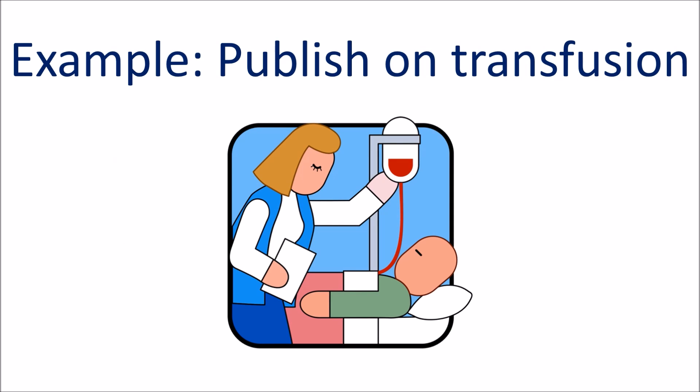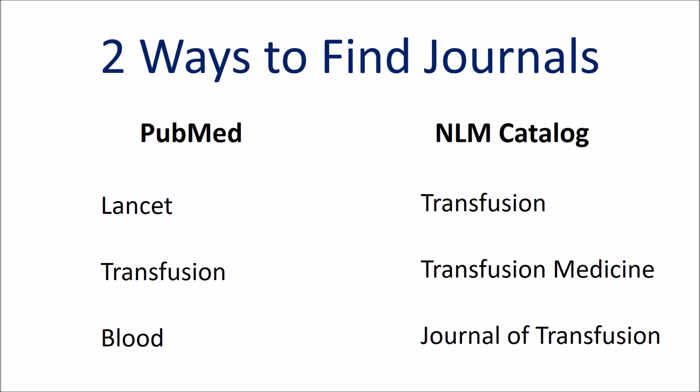So let's say you want to publish an article about transfusion. How would you know what journal to submit to? First, you could search PubMed for the word transfusion and see what journals recently published such articles. Alternatively, you could search the National Library of Medicine catalog, or NLM. The NLM is also part of the PubMed database.